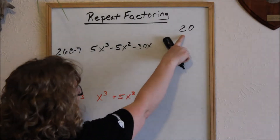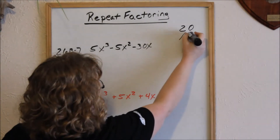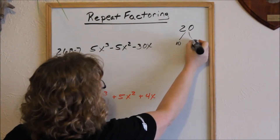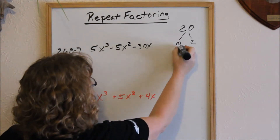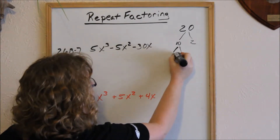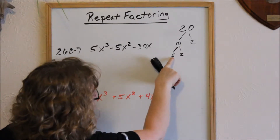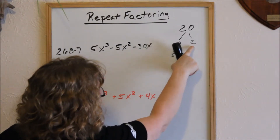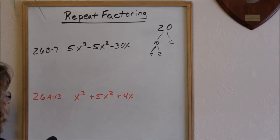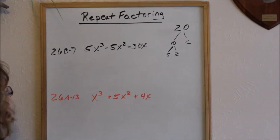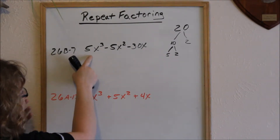Looking at regular numbers, like if we want to factor 20, we could factor into 10 and 2. Well, we can still factor 10 again to 5 and 2. So essentially, we factor 20 down to prime numbers of 5 times 2 times 2. That is what we're going to be doing with these trinomials and binomials — factoring until we can't factor any more, which is the prime factors.